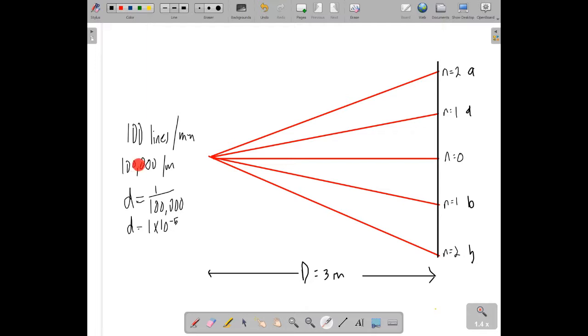So 100 lines per millimetre is 100,000 per metre, and that will give you a slit separation of 1/100,000th of a metre. So 100 lines per millimetre means there's 1/100th of a millimetre between each line. When you write it in standard form, that's just 1 times 10 to the minus 5 metres for your value for d.